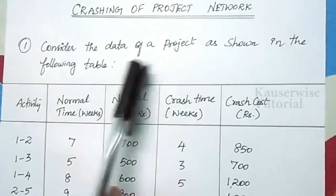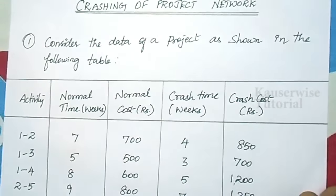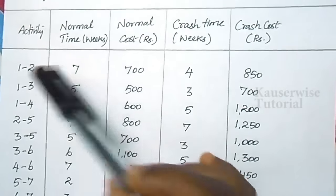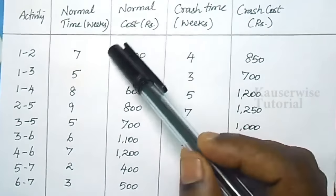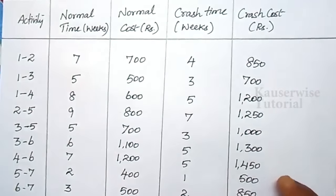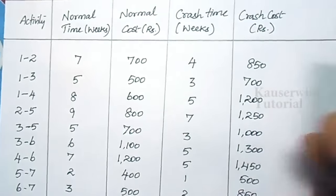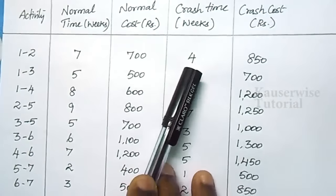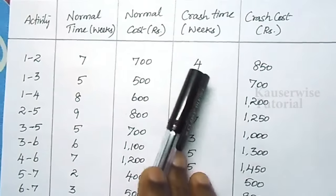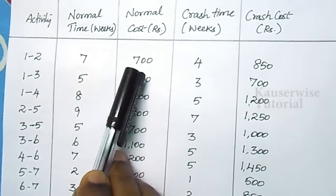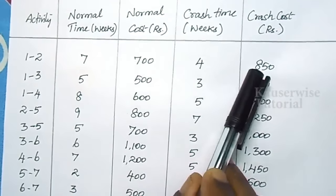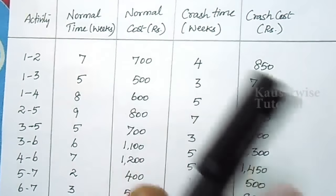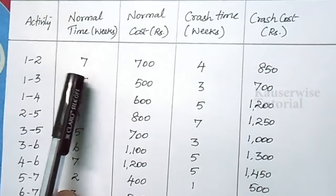Consider the data of a project as shown in the following table. Different activities are listed with their normal duration in weeks, normal cost, crash time, and crash cost. When we speed up the activity, the same activity can be completed in fewer weeks. Generally, when we speed up the activity, the cost will be higher compared to normal cost — for example, normal cost 700 and crash cost 850. So when we crash an activity, the cost increases while the crash time is lesser than normal time.